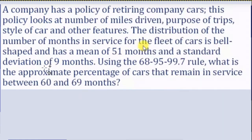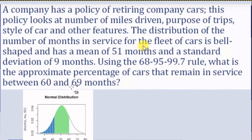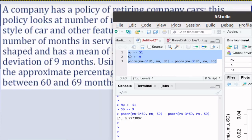Now in this problem we want to find the area between 60 and 69. That means that 60 is really one standard deviation above the mean — 51 plus 9 is 60. And notice that 69 is really two standard deviations above the mean. So we're looking for the area right in there between one standard deviation and two standard deviations of the mean.